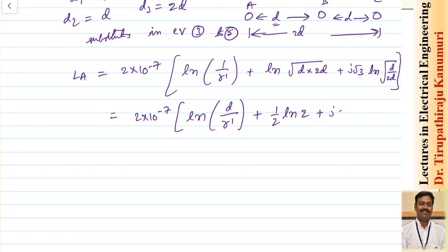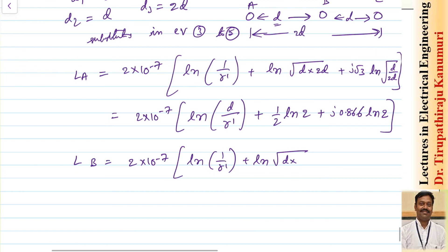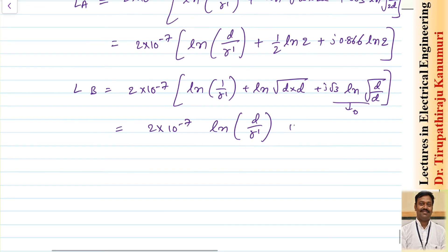For conductor B, distances from B to C and B to A are both d. So: Lb = 2×10⁻⁷ [ln(1/r') + ln(√(d·d)) + j√3·ln(√(d/d))]. Since d/d = 1, ln(1) = 0, and √(d²) = d, this simplifies to Lb = 2×10⁻⁷·ln(d/r') H/m.